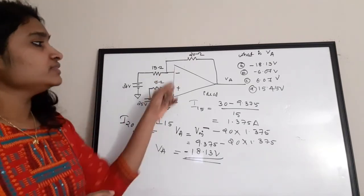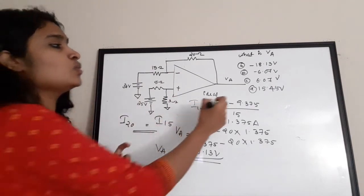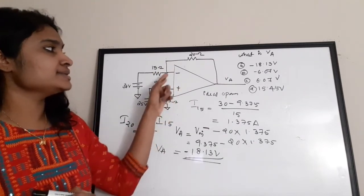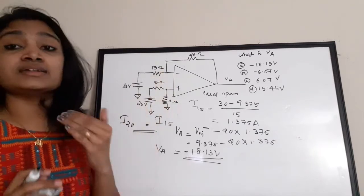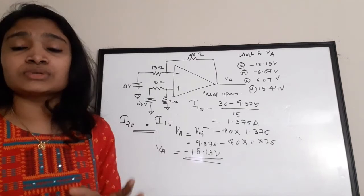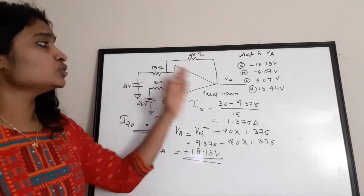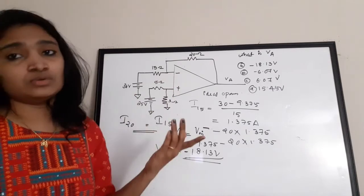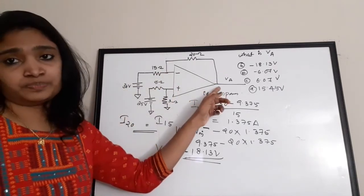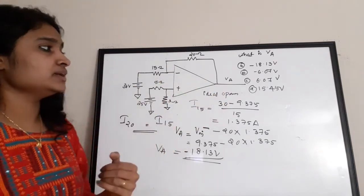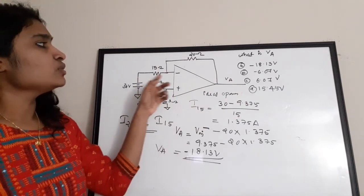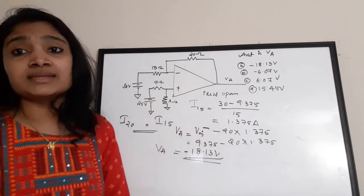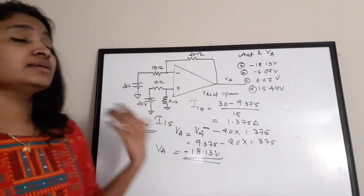To summarize this problem: first, we used the virtual short circuit condition (V_in+ = V_in−) to find the inverting terminal voltage. Second, we applied the ideal op-amp assumption (no input terminal current) to equate I15 = I20. Finally, KVL gave Va = V_in− − I20 × 20Ω = −18.13V.